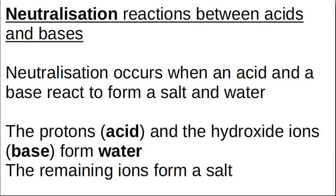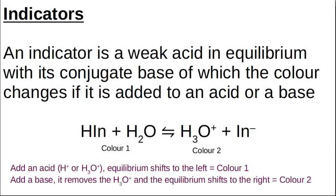We use the nature of the salt as the basis for choosing our indicators when we do titration. Indicators work through equilibrium reactions. An indicator is a weak acid — usually an organic acid — and it sits in equilibrium with its conjugate base.